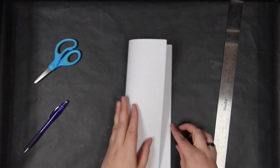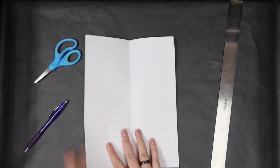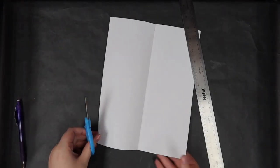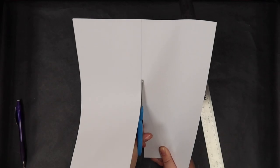We're going to grab our two pieces of printer paper as well as our scissors, ruler, and a pencil. We're going to fold the paper hot dog style and draw a line down where we folded the paper and cut our two sheets of paper in half.